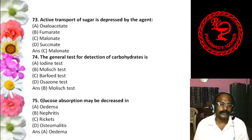Question 38: The monosaccharide units linked by 1→4 glycosidic linkage is — Maltose, Sucrose, Cellulose, or Cellobiose. The answer is maltose, which has a 1→4 glycosidic linkage.